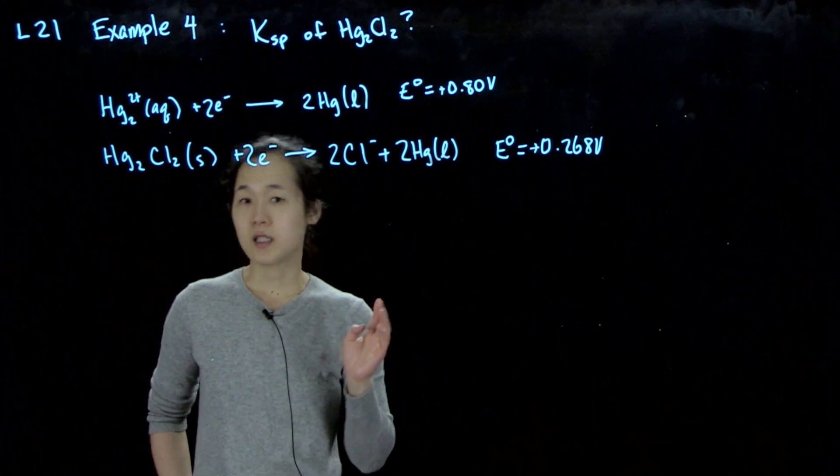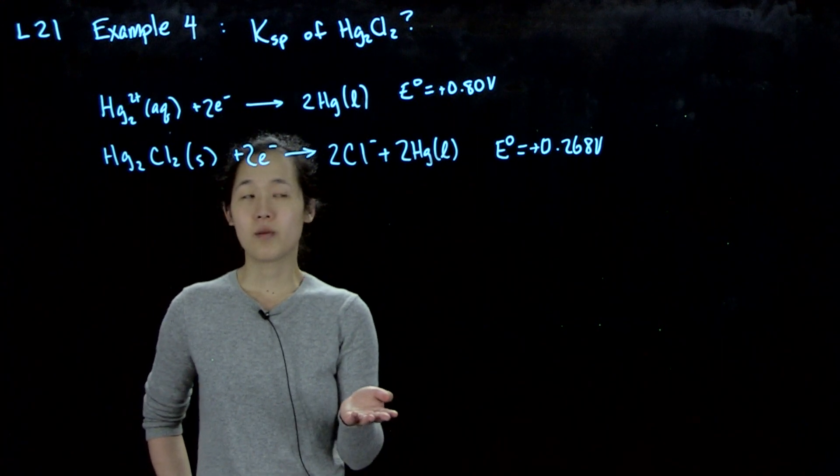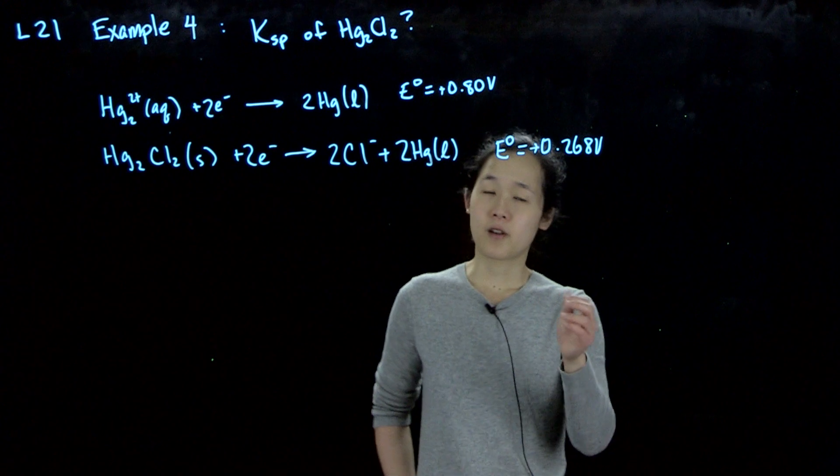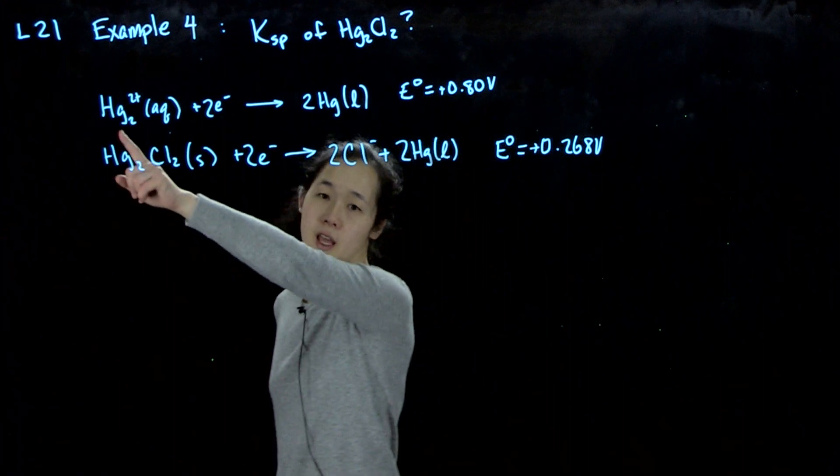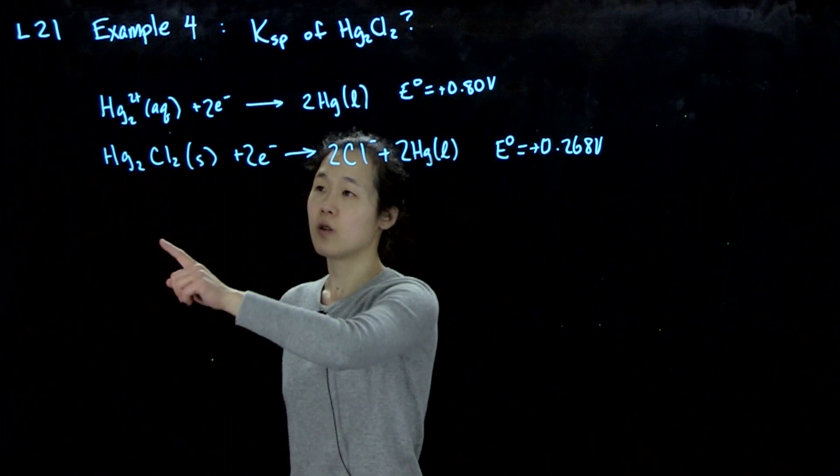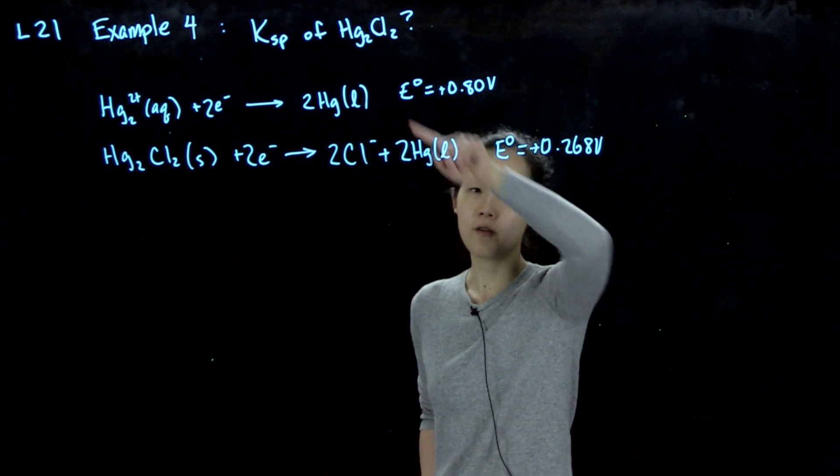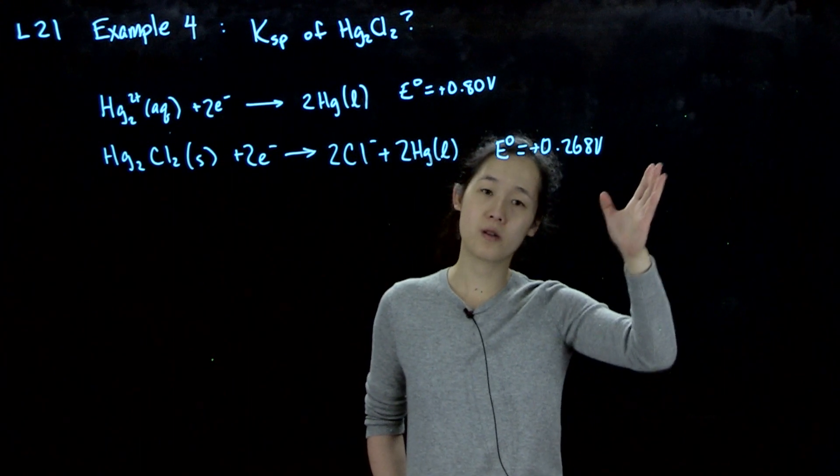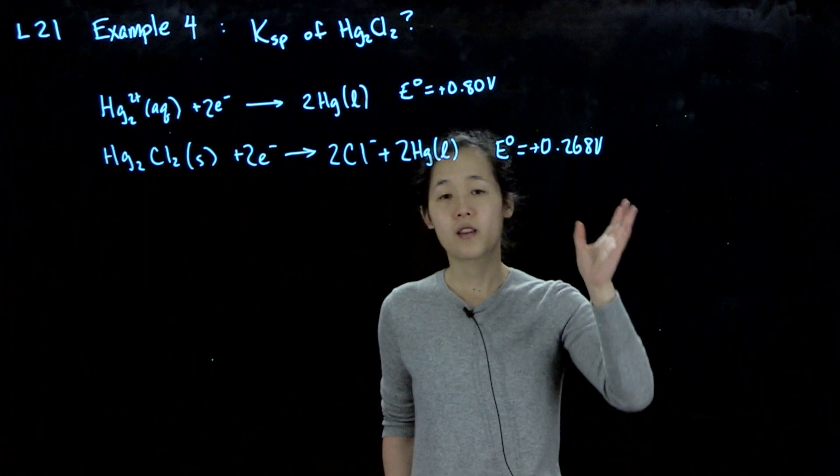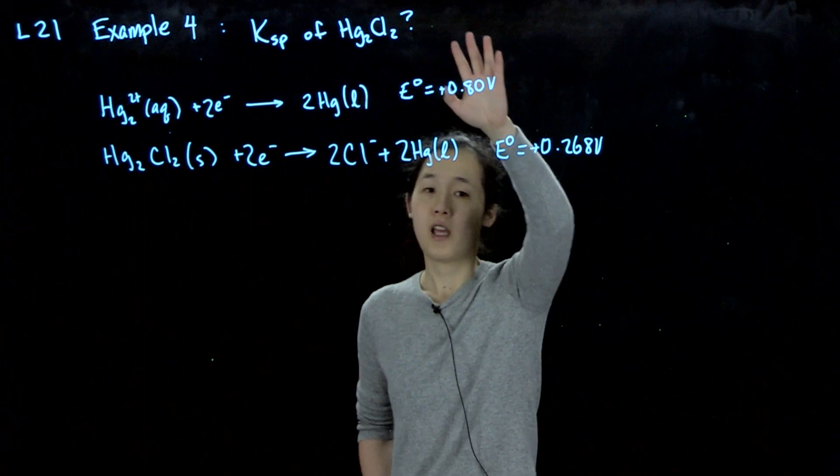The givens that I'm going to give you in an exam situation would be we know the standard reduction potential of aqueous mercuric ion or the reduction potential of mercuric chloride. So these are our two values that you would read off of the table or that I would give you. And then the question will be how to find Ksp.